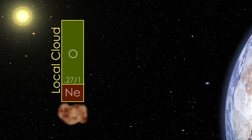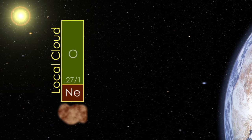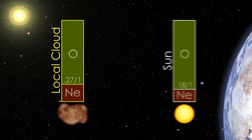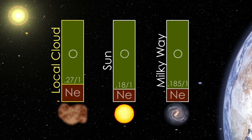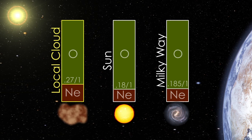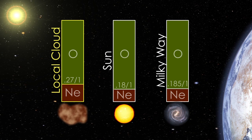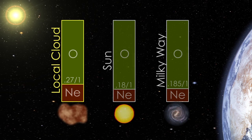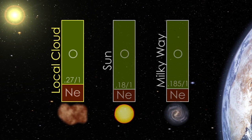The IBEX measurements of heavy interstellar atoms, oxygen and neon, show a difference from the solar system and galaxy as a whole. This puzzle may mean that the sun has moved out of the region where it formed, or that some of the oxygen has been captured by dust in interstellar space.